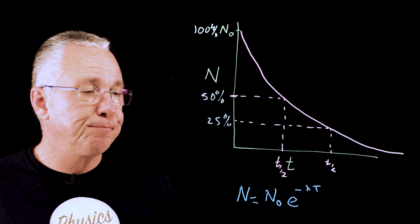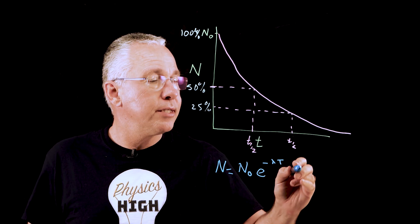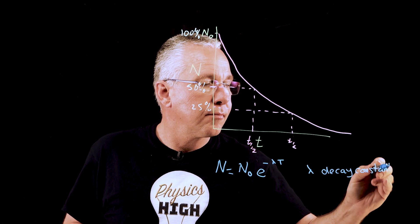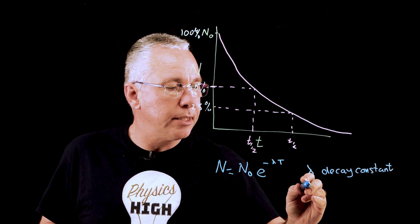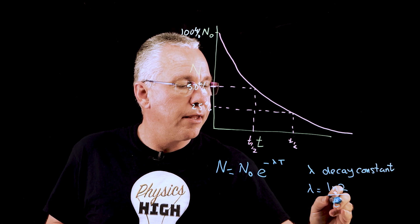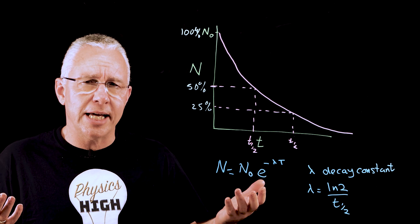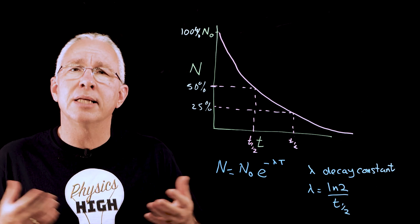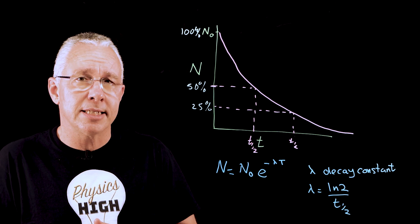But what is lambda? Lambda is referred to as the decay constant. And its value can be determined as lambda is equal to the natural log of 2 over the half-life. So, what does the decay constant actually represent? Well, it is a measure of how quickly a substance decays.